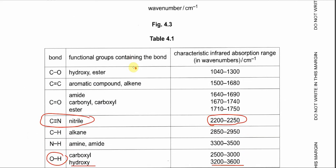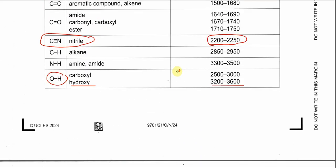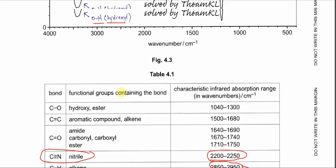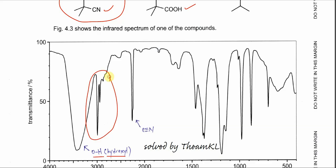Part one: explain why absorptions at 2850–2950 cm⁻¹ are not useful to determine which compound produces the IR spectrum. This absorption range corresponds to alkane C–H bonds. All three compounds A, B, and C contain C–H bonds, so this absorption cannot distinguish between them — it is not a significant absorption for distinguishing A, B, or C.